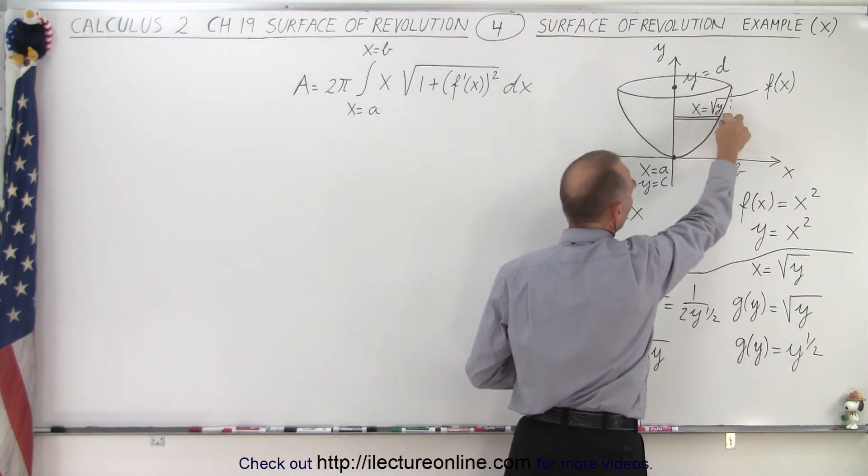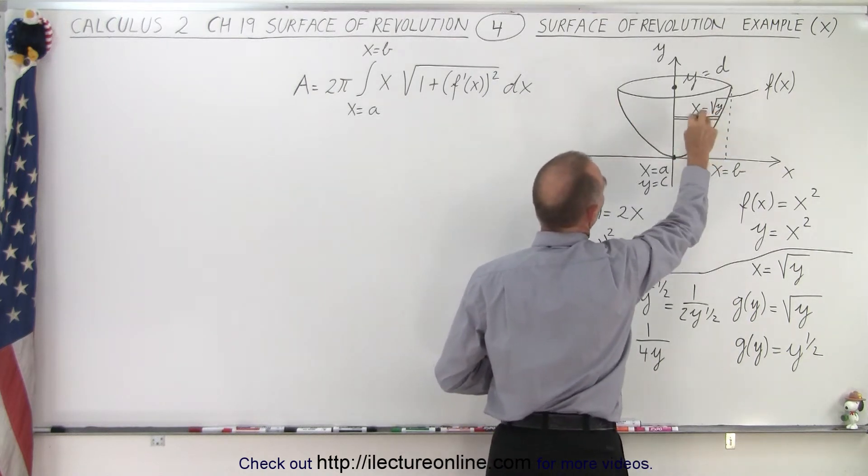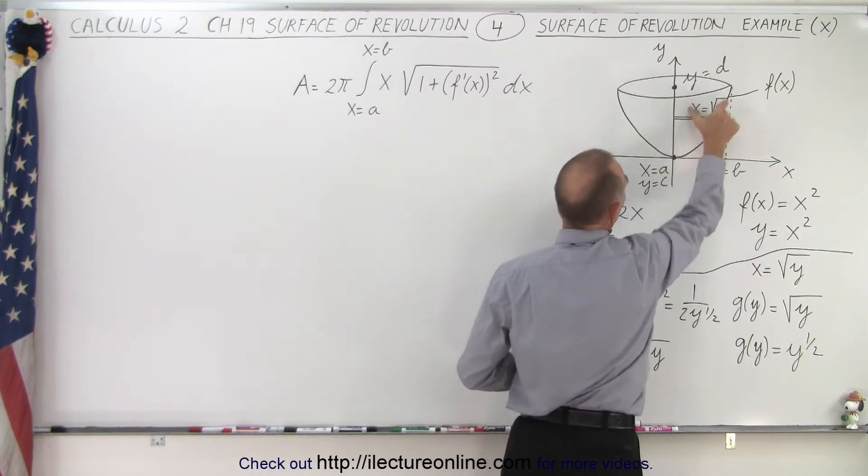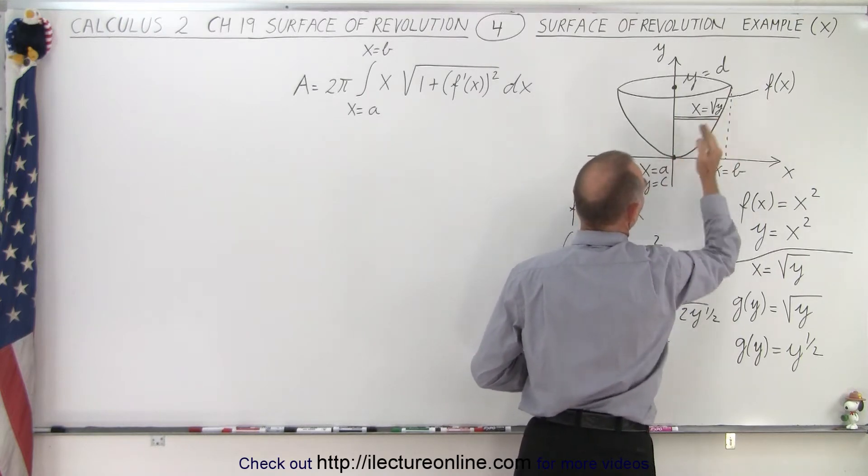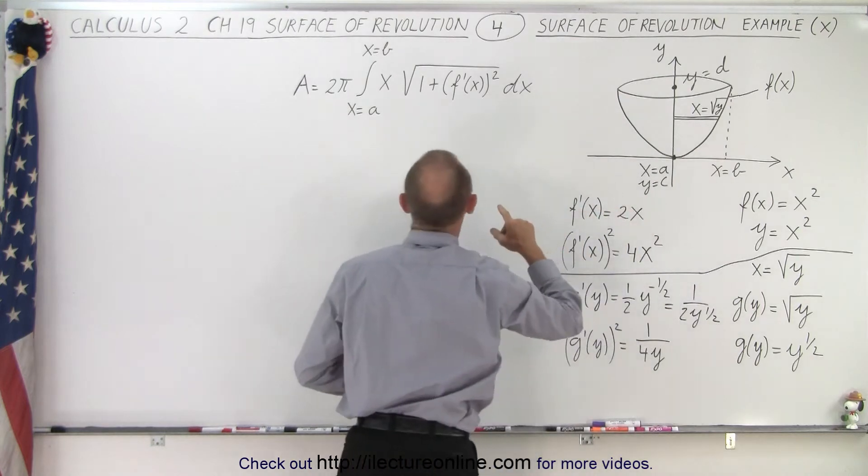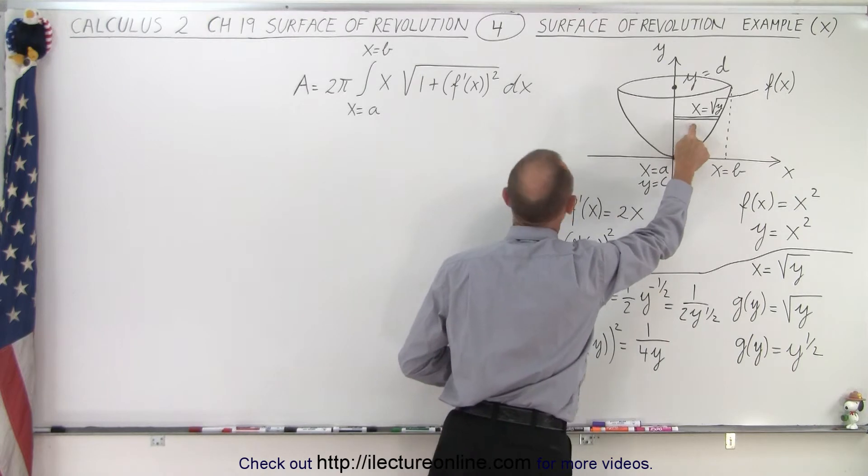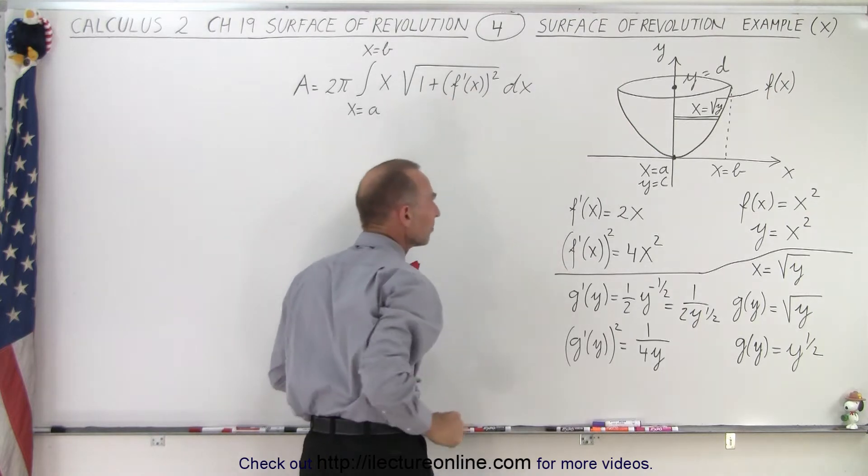We call that a small little arc length and we're going to revolve it around the y-axis. Notice that the distance from here to here is going to change depending upon where we are. It's going to be equal to x, and x of course varies depending upon where we're going to be on the surface. Then we find the area by saying 2π times the radius. In this case, the radius is going to be x times the square root of 1 plus the derivative of the function quantity squared times dx.